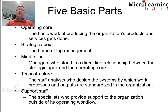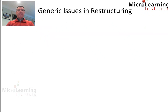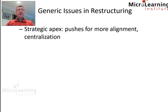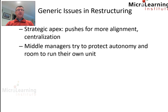Those are the five basic parts of the organization that Mintzberg identified. When we are trying to restructure the organization, we come across some generic issues. Firstly, in restructuring, the strategic apex is pushing for more alignment and centralization.